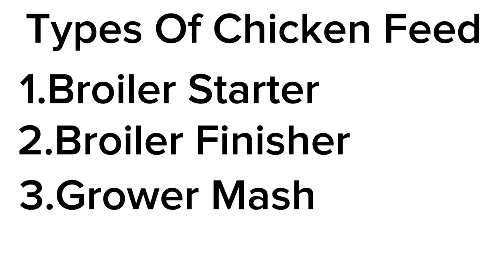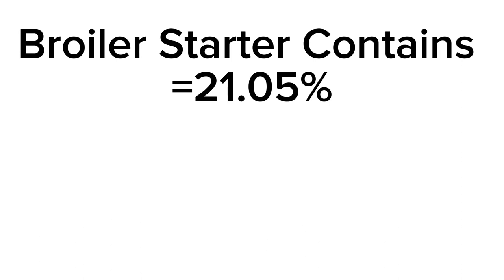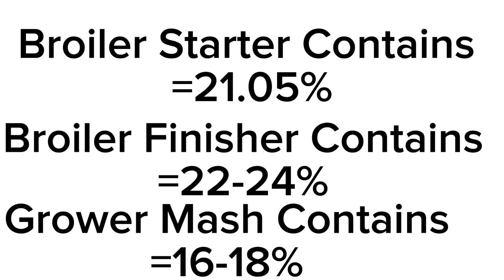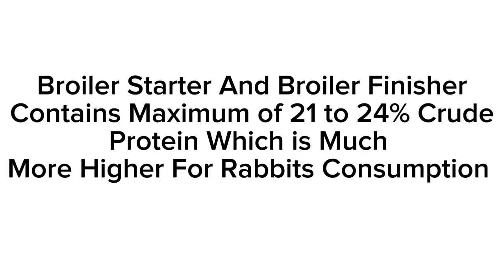With broiler starter, which has a high crude protein of about 21 to 24 percent, it can be suitable for rabbits that are being raised for slaughter, depending on how long you want to keep the rabbit. With grower mash, it can be reformulated for rabbits. In poultry farming, broiler starter contains 21% crude protein, broiler finisher contains 22 to 24%, and grower mash contains 16 to 18% crude protein — which is the essential level for rabbits.